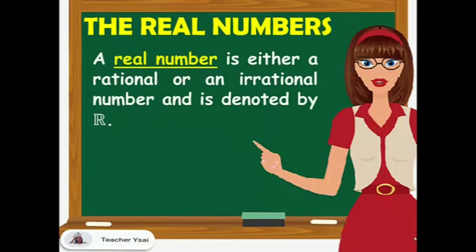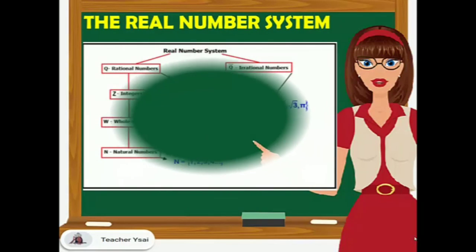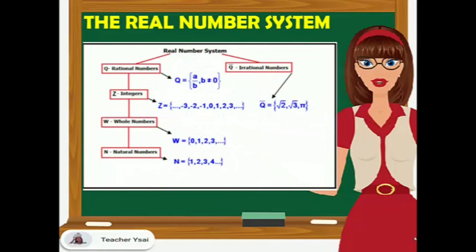A real number is either a rational or an irrational number, and is denoted by the letter-like symbol R. So the real number system is divided into two: the rational numbers and irrational numbers. Rational numbers consist of integers, whole numbers, and natural numbers.